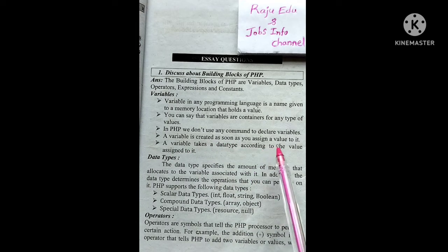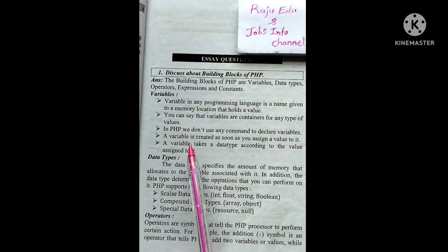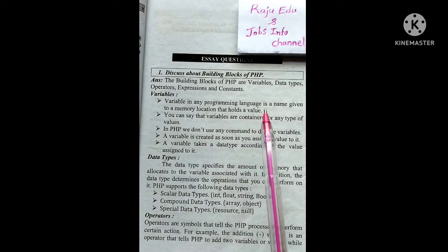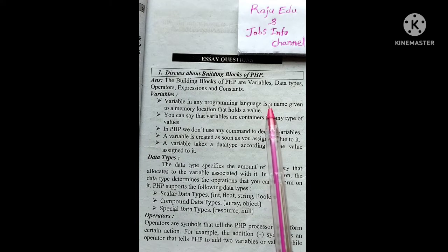A variable takes a data type according to the value assigned to it. In C language, we mention the data type when declaring a variable, but in PHP we don't need to mention the data type. We'll discuss variable declaration rules in the next video.